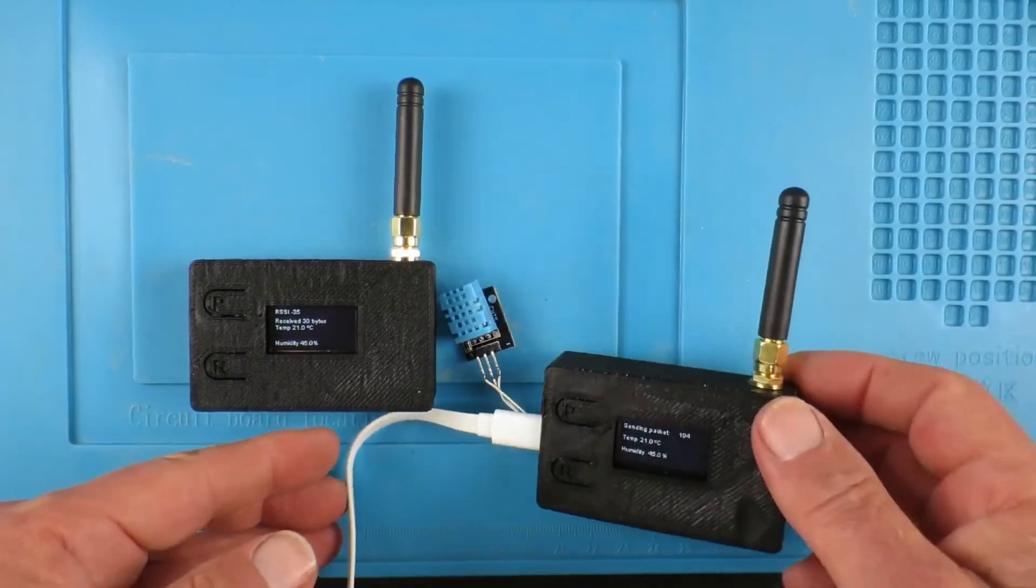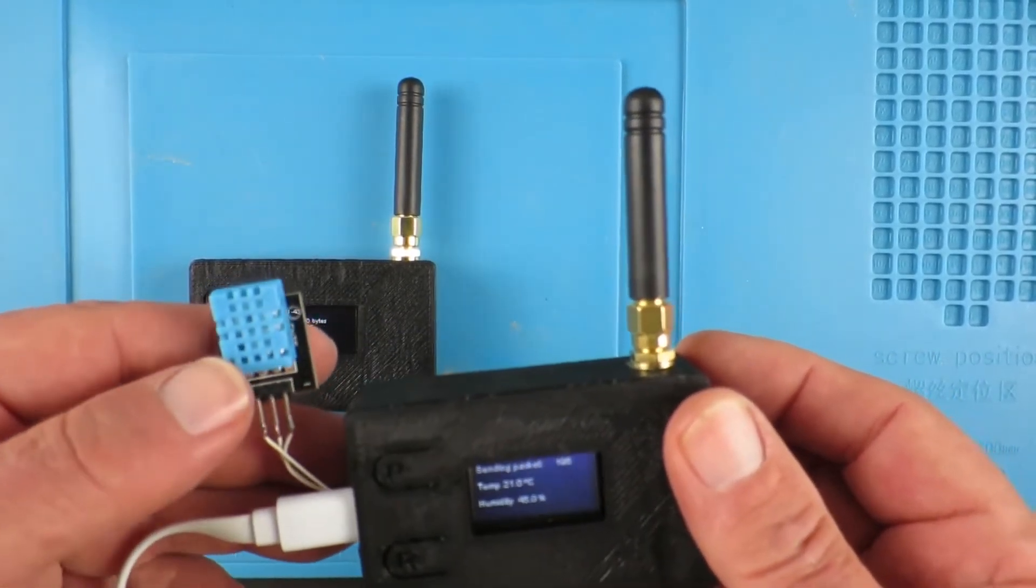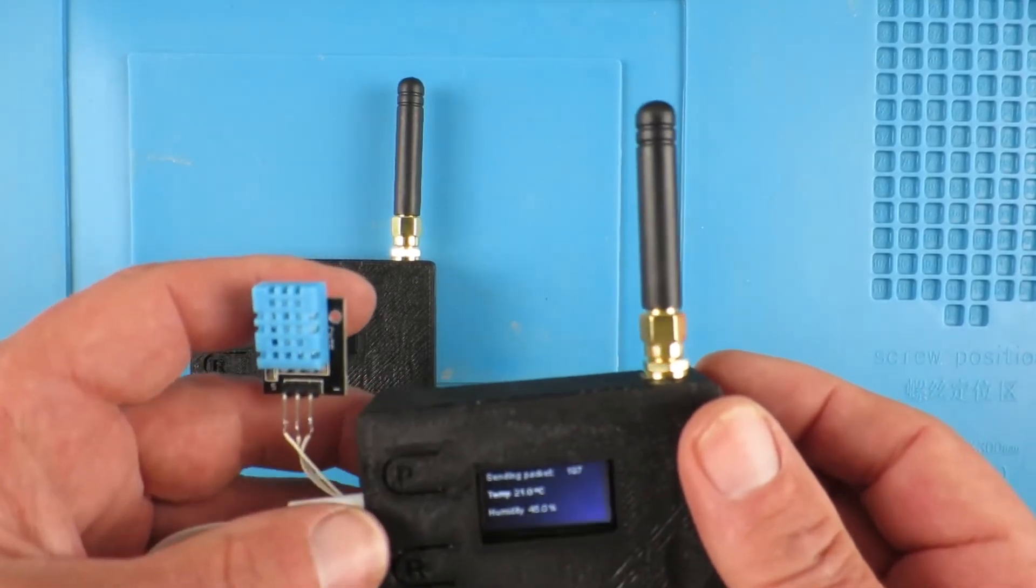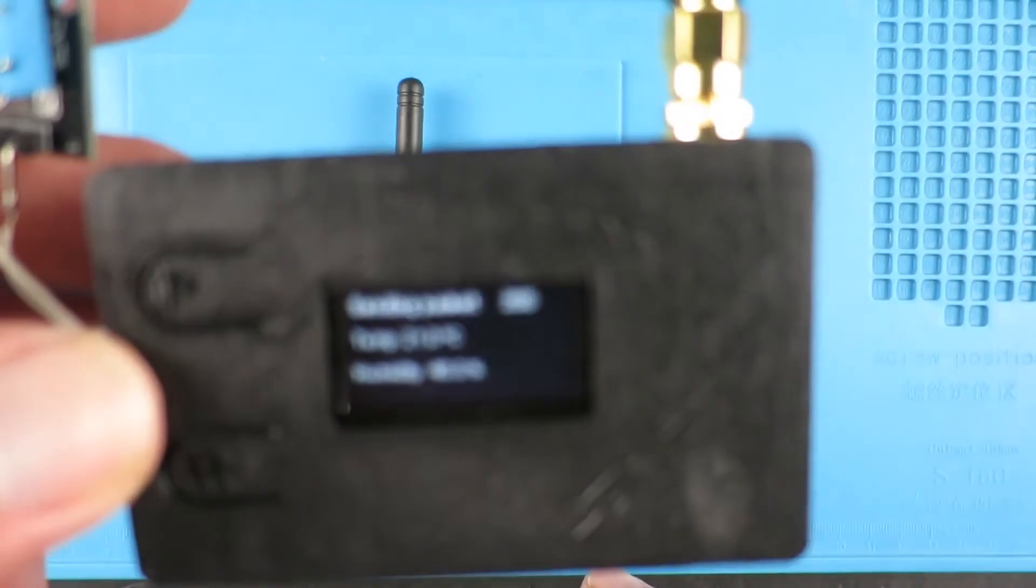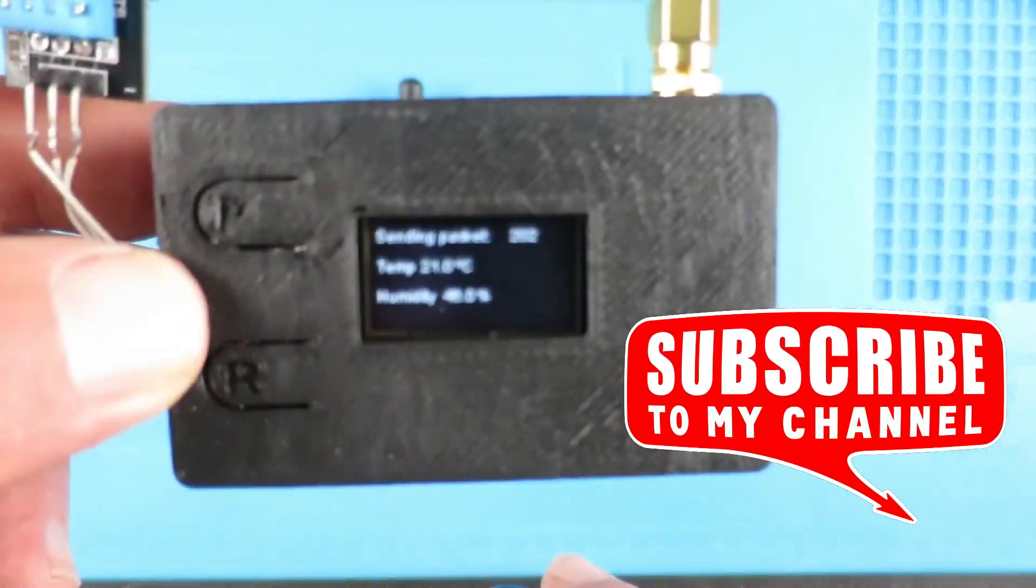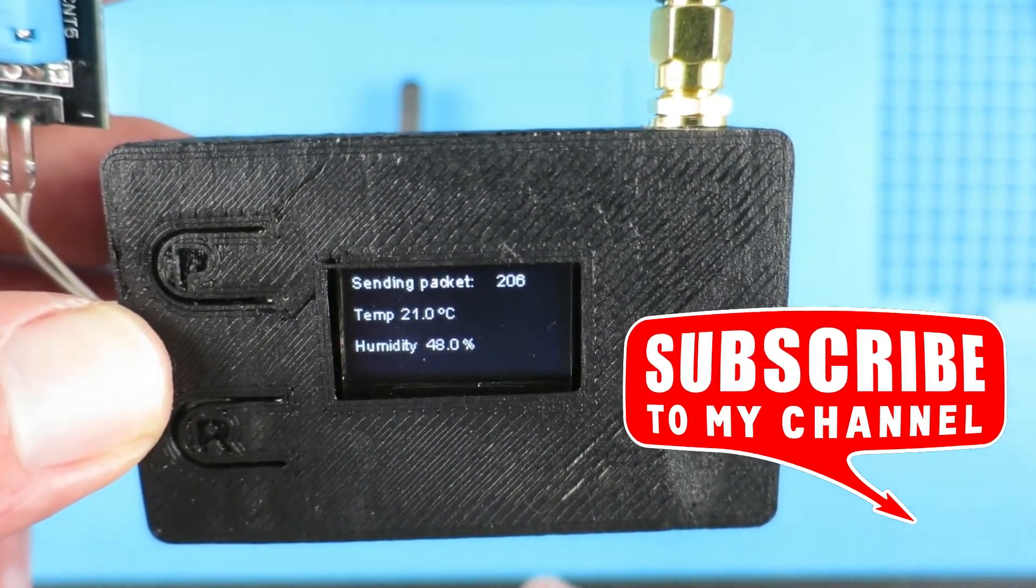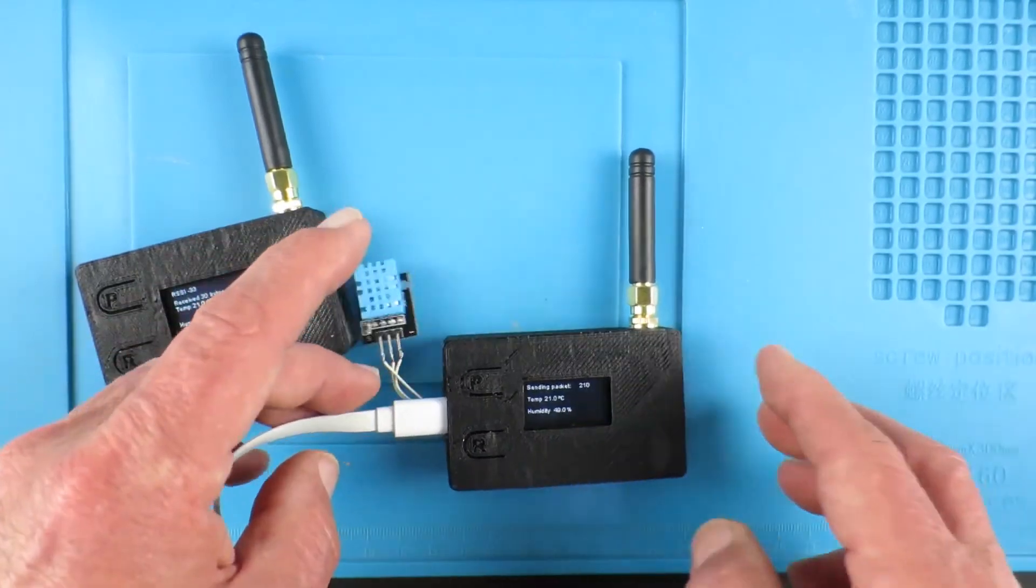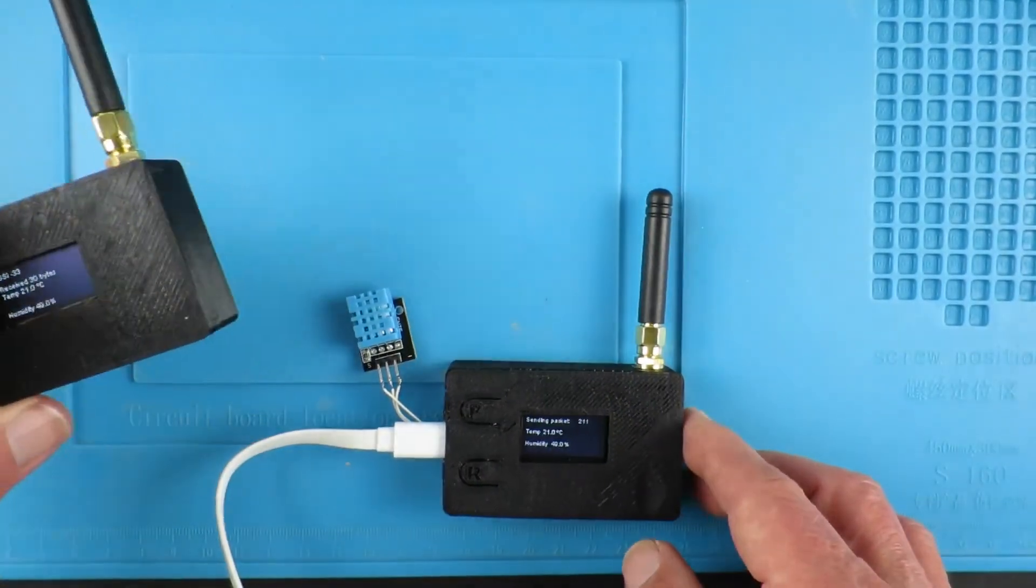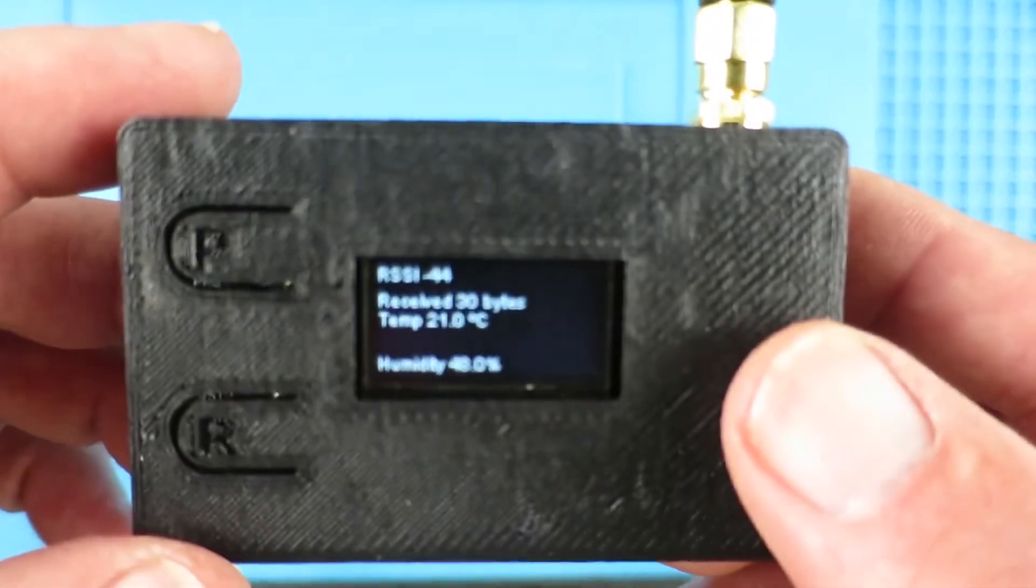What I've done now is just on the sending unit, put in one of these little DHT11 temperature and humidity sensors. And hopefully we can see on this display, not only the packet count increasing, but the temperature and the humidity. That is clearly being sent now over the LoRa link, the radio link, to the receiving device.